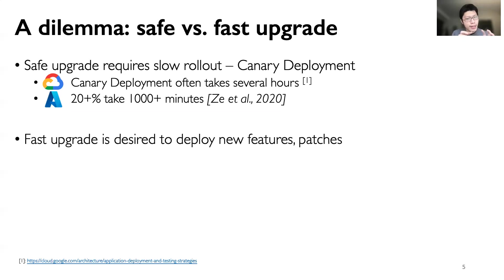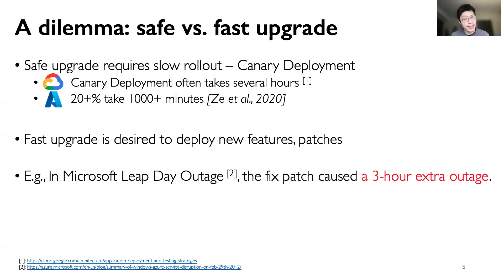This slow rollout procedure creates a dilemma, because faster upgrade is desired in order to deploy new features and fix bugs. An interesting example of such a dilemma is that to fix the famous libssl bug in Microsoft, a patch was quickly deployed and caused an extra 3-hour outage.